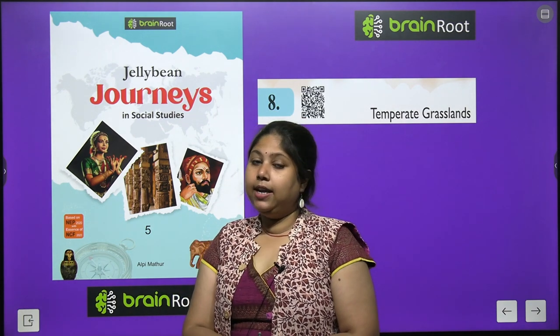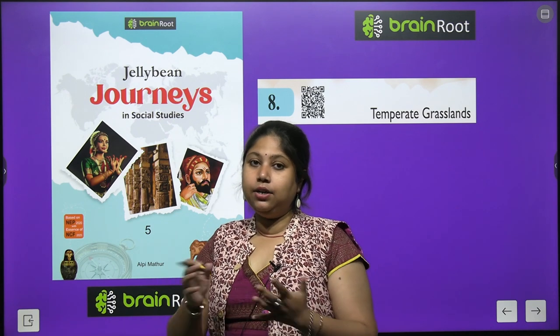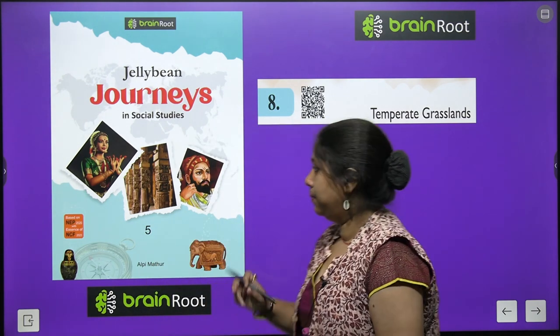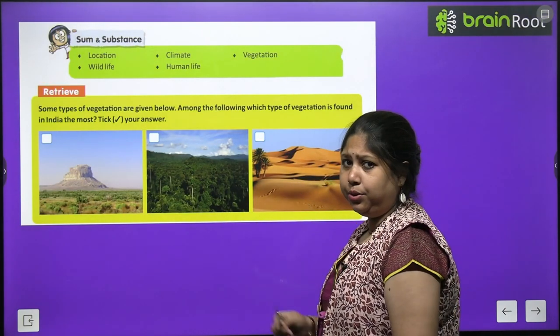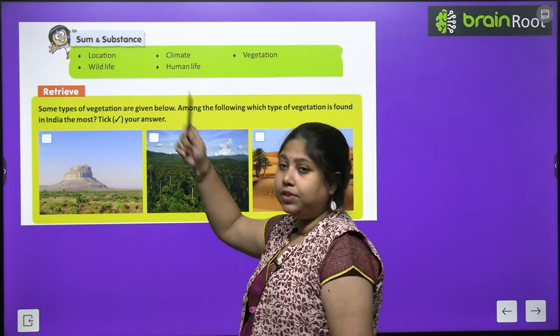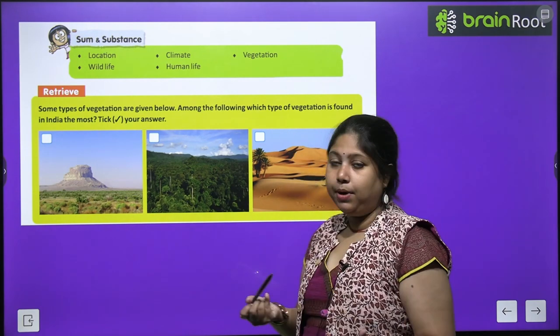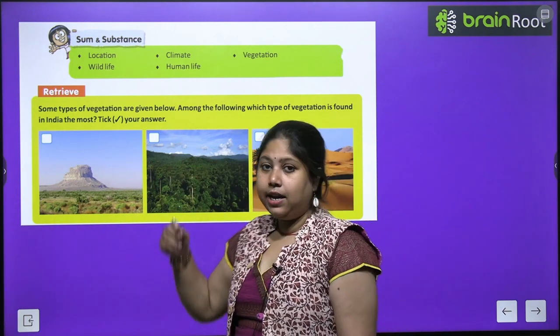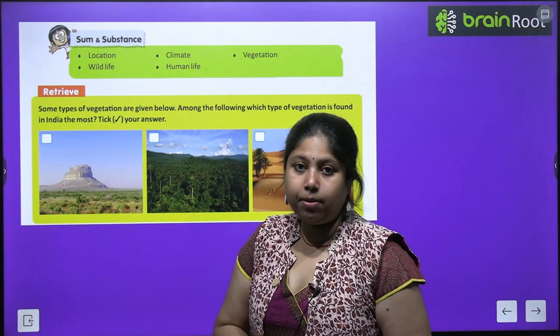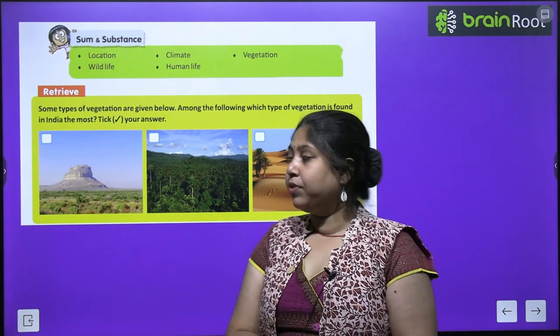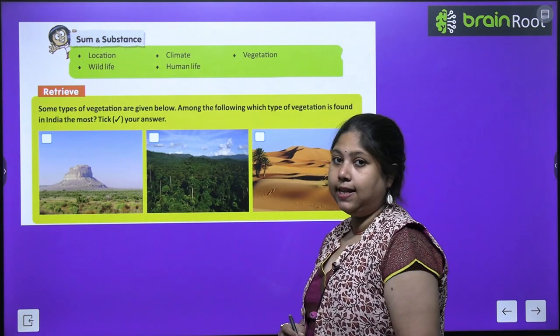Children, we have learned that Earth has different vegetations and different regions. Today we will learn about areas where there are big grasses — grasslands. What are we going to cover in this chapter? We will cover the location of these places, the climate of grasslands, vegetation, wildlife, and how people live and survive here.